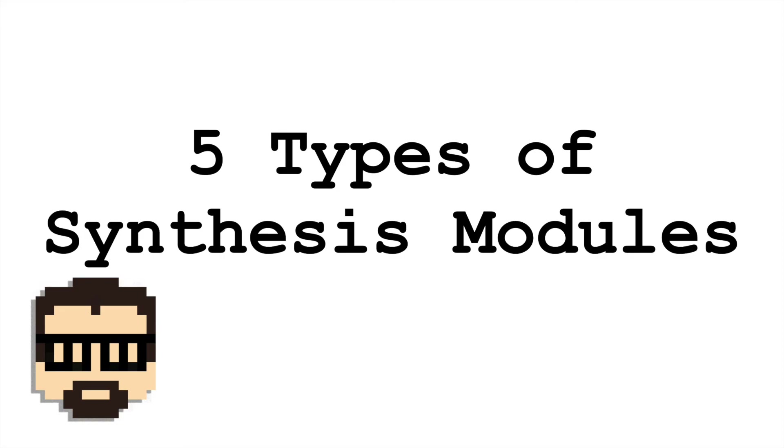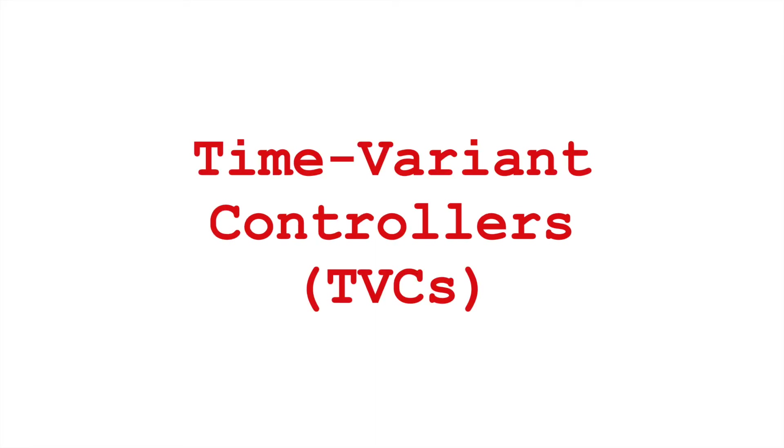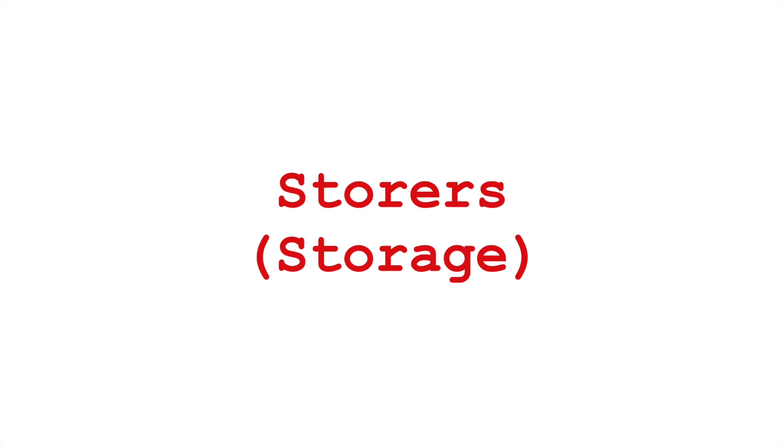The five modules I list are: generators, combiners, modifiers, time-variant controllers, and storers — or really, storage.